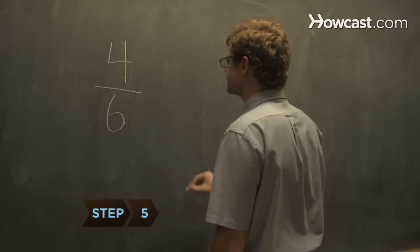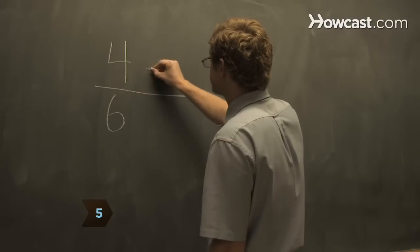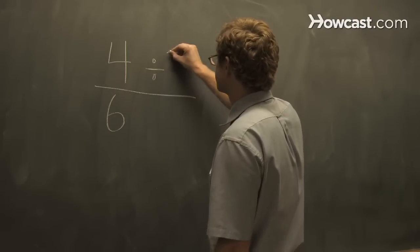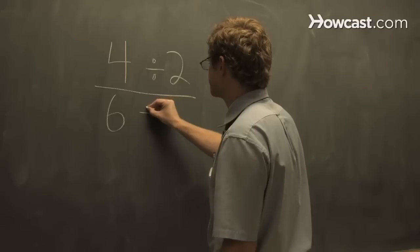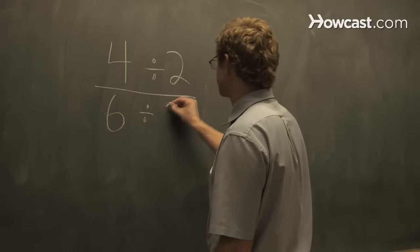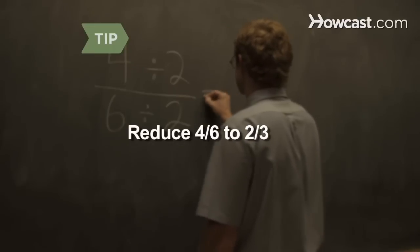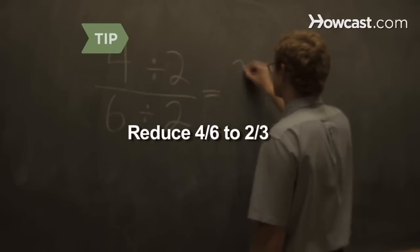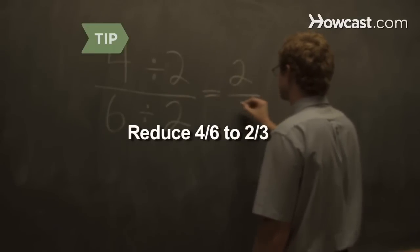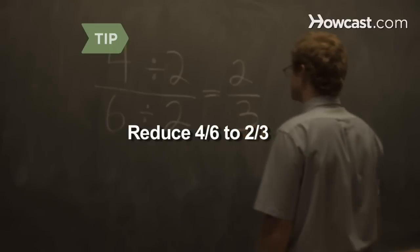Step 5: Reduce the answer by dividing both the numerator and the denominator by the greatest common factor, which is the highest number by which both can be divided. In the example, divide the numerator and denominator by 2, the greatest common factor. The final answer is 2/3.